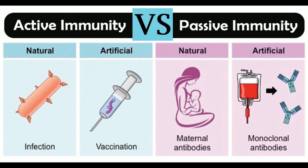Combined active and passive immunity is carried out by giving both preformed antibodies — antiserum — and a vaccine to provide immediate protection and long-term protection, respectively, against a disease. This approach is followed for the prevention of certain infectious conditions, namely tetanus, rabies, and hepatitis B. For example, a person bitten by a rabid animal might receive rabies antibodies via passive immunization to create an immediate response, and the rabies vaccine for active immunity to elicit a long-lasting response to this slowly reproducing virus.